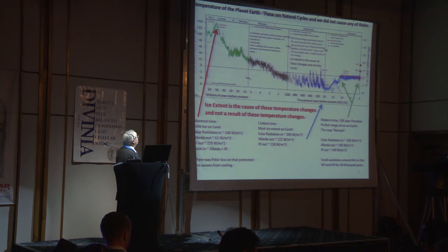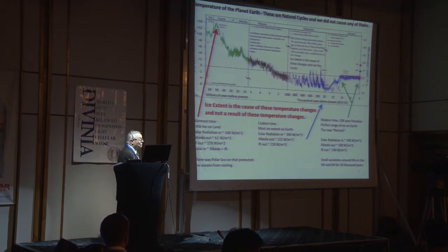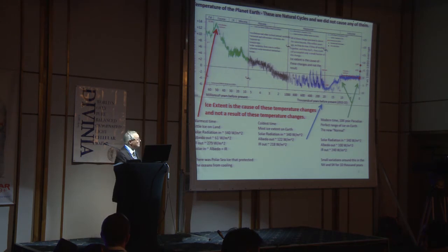Ice extent 50 million years ago was very low and the temperature of Earth was 14 degrees higher than the modern normal. Temperature got colder throughout the years until 20,000 years ago. Ice extent was at the maximum we've seen on this chart, and it was six degrees colder than now. Then we warmed out of the last major ice age into this modern normal 10,000-year period.